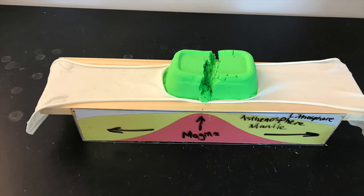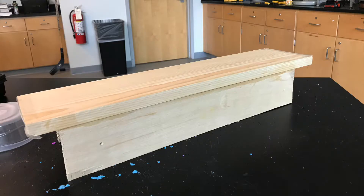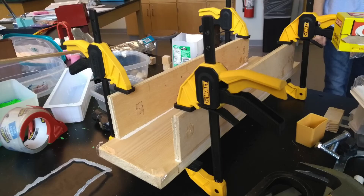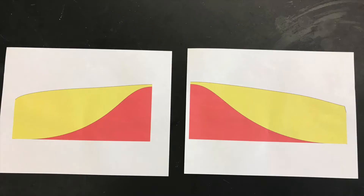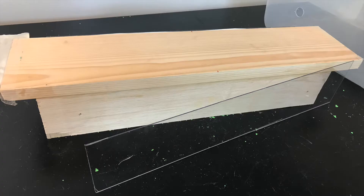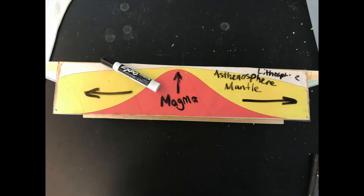To recreate our model, start by building a base by gluing three wood boards together. To hold them in place as they dry, use four woodworking clamps. Using the PDF provided in the link below, print out two cross-sectional views of the mantle to glue to the sides of the model. You will then cut out two pieces of plexiglass with the dimensions of the sideboards, which will allow for the use of dry erase markers. Glue these printed pictures to each end of the base and nail the plexiglass down over them.